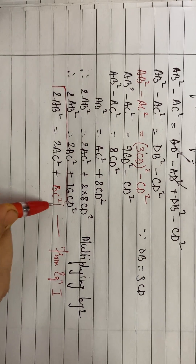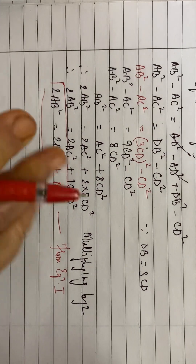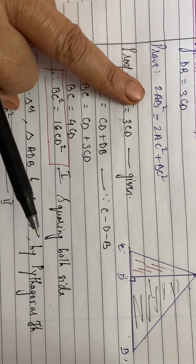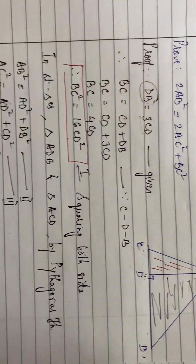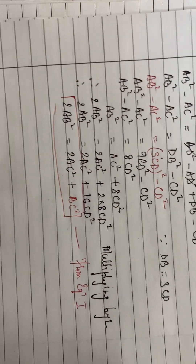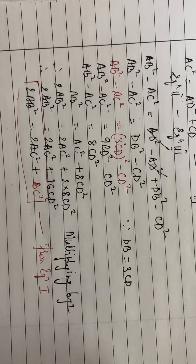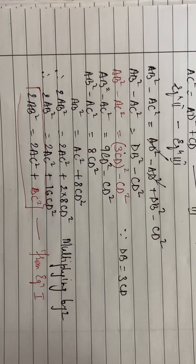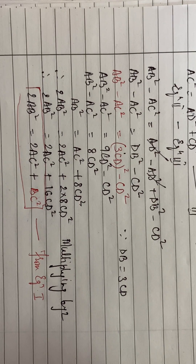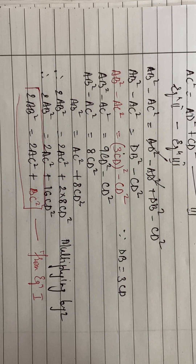This is what we had to prove. Twice AB square equals twice AC square plus BC square. Students, those who haven't subscribed, kindly subscribe to my channel.